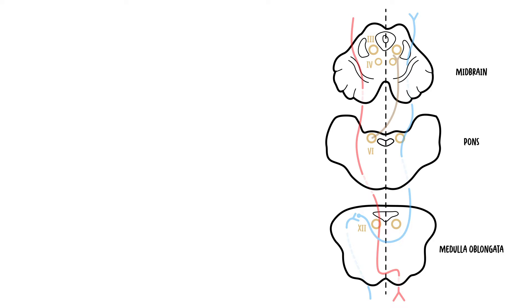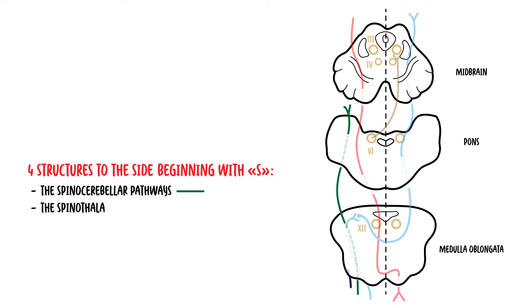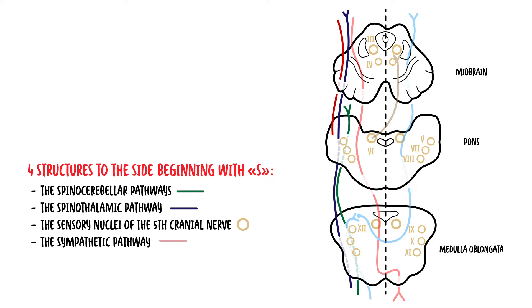The second rule is that there are four structures to the side — laterally — beginning with S, for 'sides.' These structures are the spinocerebellar pathway, the spinothalamic pathway, the sensory nuclei of the fifth cranial nerve, and the sympathetic pathway.